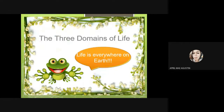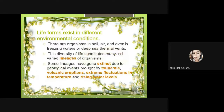Let us now discuss the three domains of life. Life forms exist in different environmental conditions — there are organisms in soil, air, and even in freezing waters or deep-sea thermal vents. This diversity of life constitutes many and varied lineages of organisms. Some lineages have gone extinct due to geological events brought by tsunamis, volcanic eruptions, extreme fluctuations in temperature, and rising water levels.